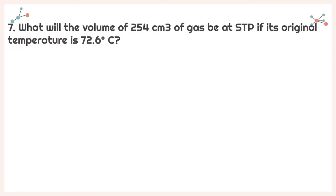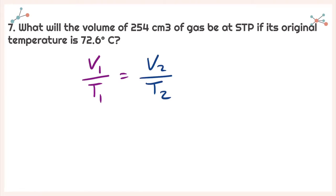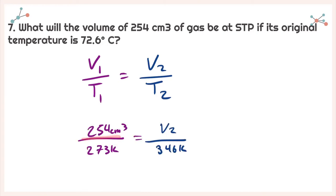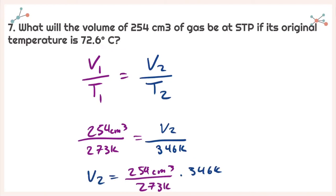For number seven, it asks what will the volume of 254 centimeters cubed of gas be at standard temperature and pressure if its original temperature is 72.6 degrees Celsius? I'm going to write down my equation: V1 over T1 is equal to V2 over T2. I see 72.6 degrees Celsius — I'm going to change that to Kelvin because standard temperature and pressure is given in degrees Kelvin. My original volume is 254 centimeters cubed; standard temperature is 273 degrees Kelvin; V2 is what I'm solving for; and 72.6 degrees Celsius becomes 346 degrees Kelvin. Solving for V2, I get 254 centimeters cubed times 346 Kelvin divided by 273 Kelvin, giving me a new volume of 322 centimeters cubed.